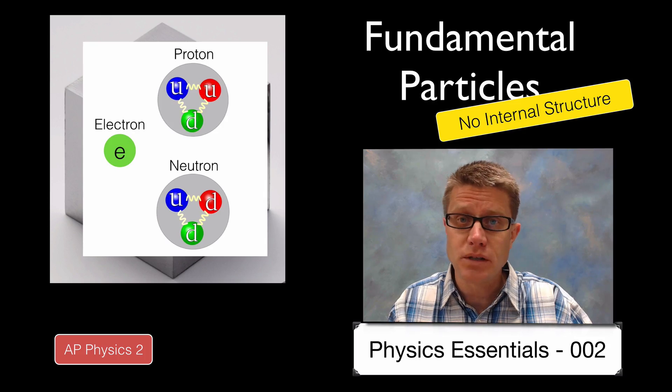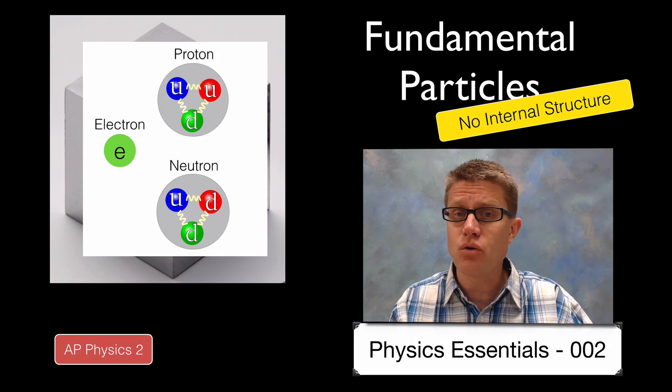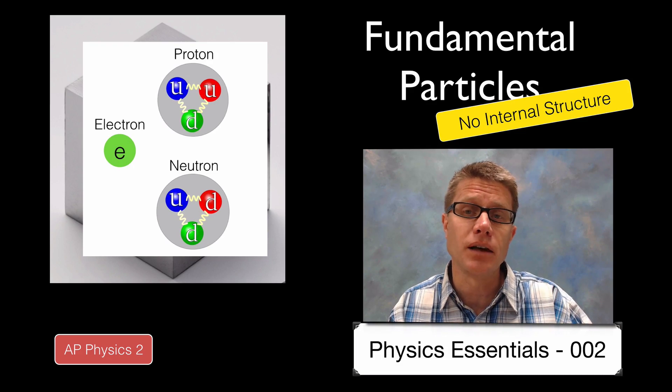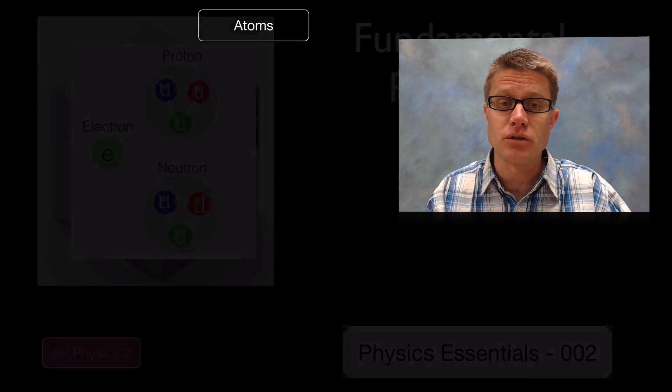A proton is made up of two ups and one down quark. And a neutron is made up of two downs and one up quark. And so when we finally get to the level of quarks and electrons, we are at the level of fundamental particles. In other words, particles in physics that have no internal structure.